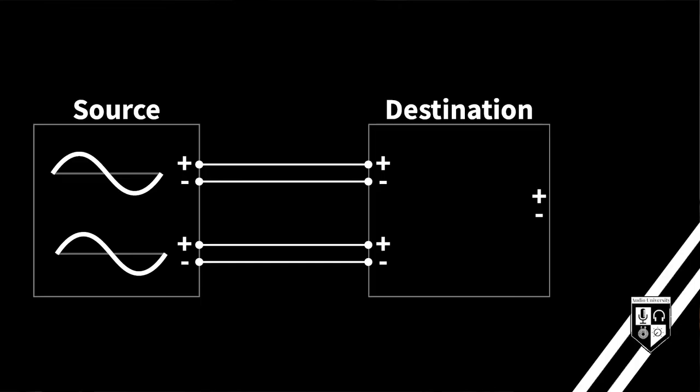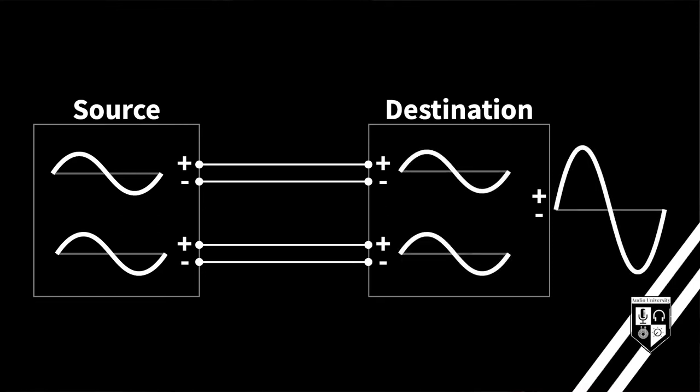To better understand the difference between polarity and phase, let's imagine identical audio signals traveling through two separate cables. These two copies of the signal are currently in the same polarity. They will add together at the destination. This is called constructive interference.